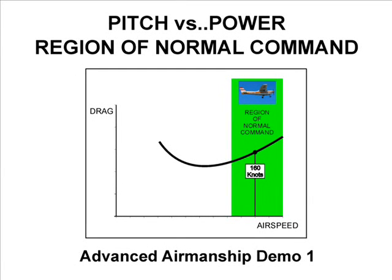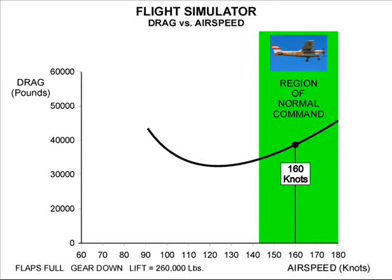This is demonstration number one from Aviation Textbook Advanced Airmanship Book 1 Precision Flying. This demonstration examines pitch and power control in the region of normal command, which is a normal operating region for light airplanes during approach. The normal command region is the area where drag increases with increasing airspeed. This simulation utilizes a precision jet transport simulator flying at 160 knots in the landing configuration.